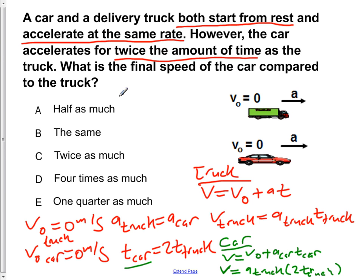So now if we compare these two, the velocity for the truck is A truck times the T of the truck, while the velocity of the car is equal to A of the truck times 2 times T of the truck.